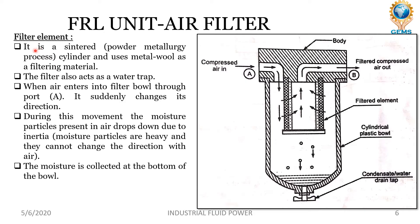The filter element is sintered — made using a powdered metallurgy process — and uses metal wool as a filtering material. The filter also acts as a water trap. When air enters into the filter bowl through port A, it suddenly changes its direction. During this moment, the moisture particles present in air drop down due to inertia. Moisture particles are heavy and they cannot change direction with air, so moisture is collected at the bottom of the bowl.